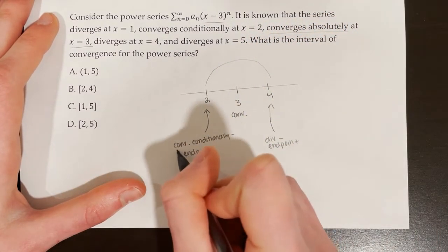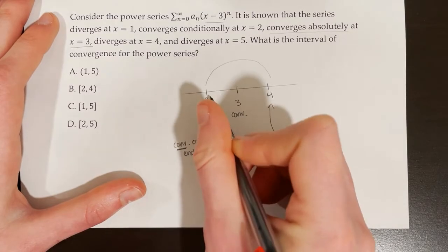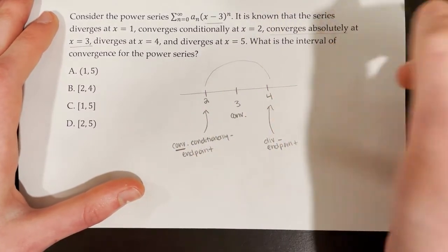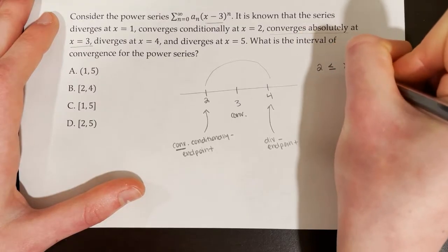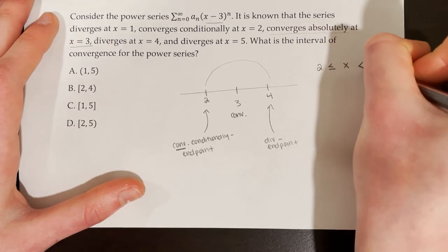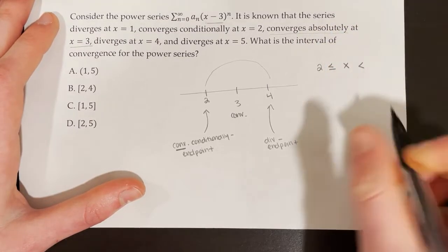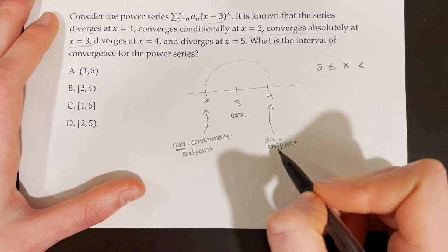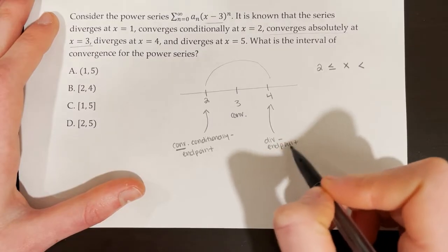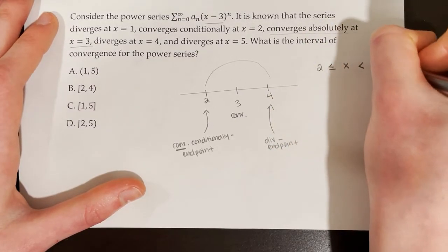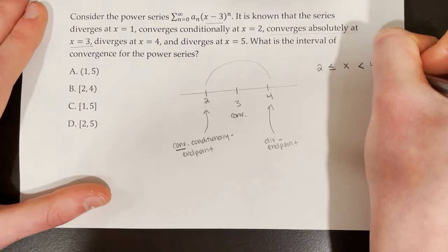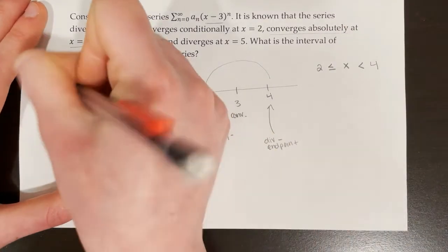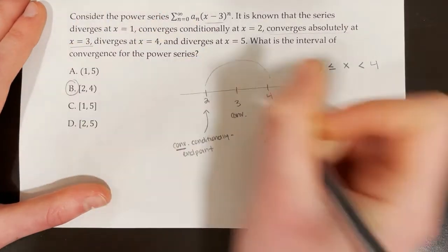Since the series converges at x equals 2, we include 2 in the interval. Since the series diverges at x equals 4, we exclude 4. So the interval is 2 less than or equal to x less than 4, or in interval notation [2, 4). That matches answer choice B.